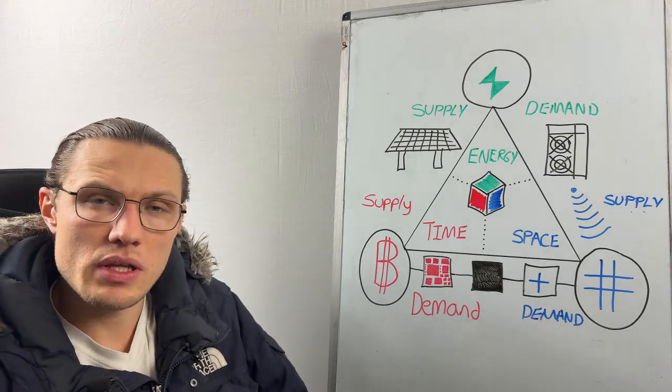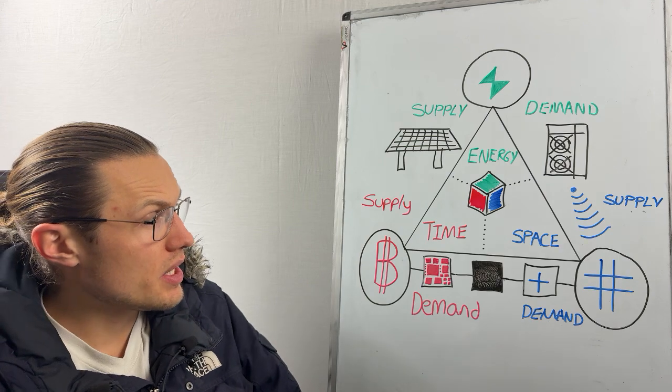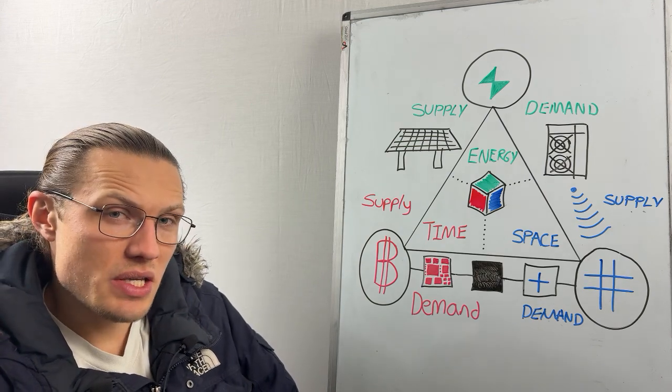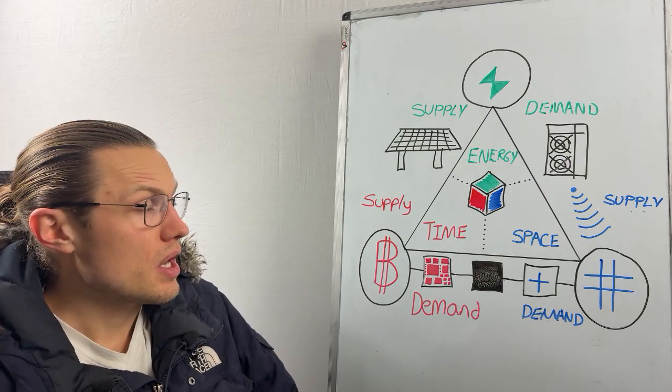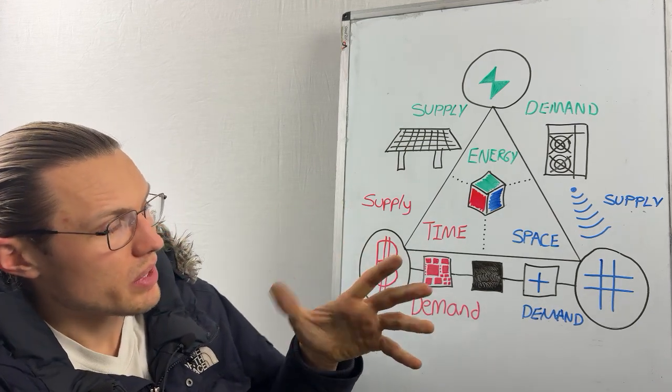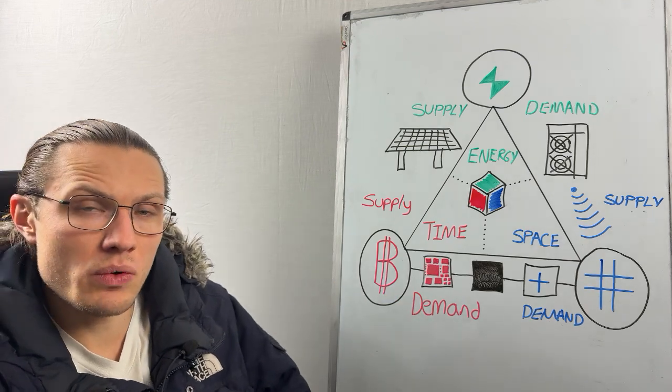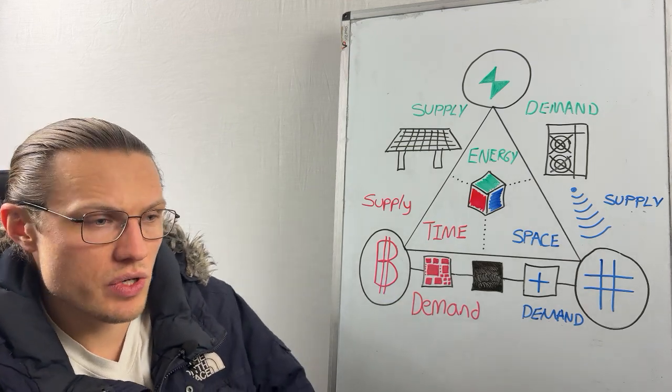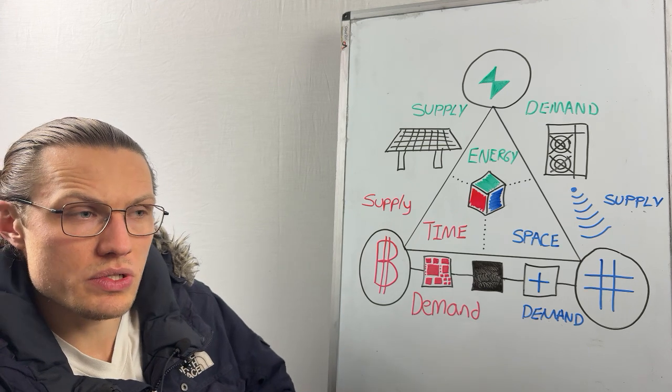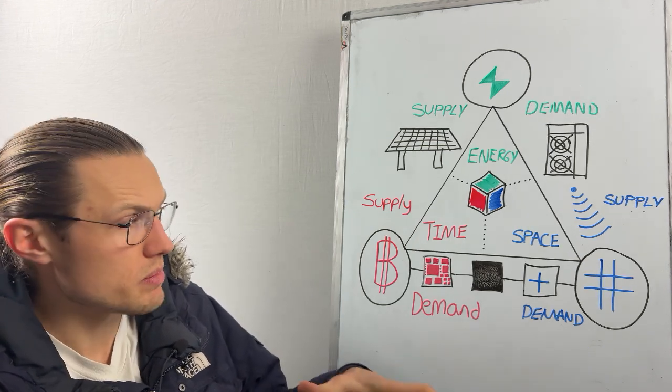Hello there and welcome to another episode from the Hash Power Academy. Today's topic is energy, space, and time. This is basically a drawing of a zoomed-out perspective of the Bitcoin network, structuring all of the core components of the Bitcoin network's economic energy ecosystem.